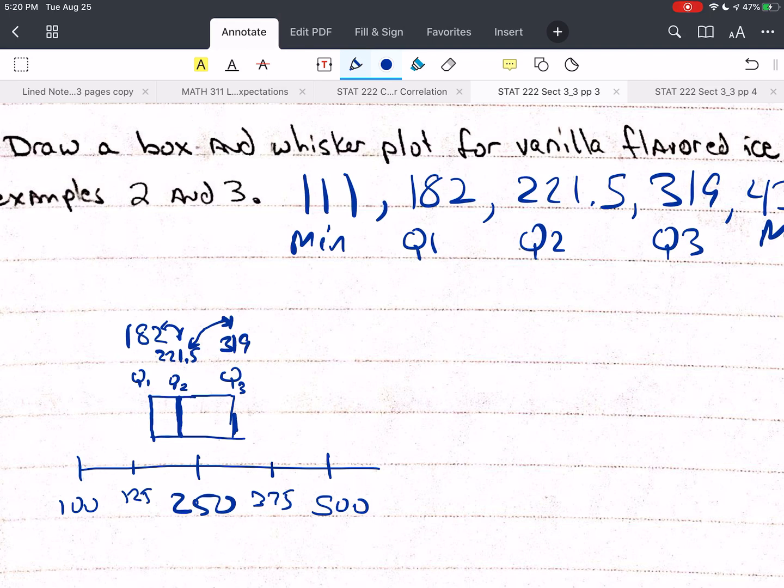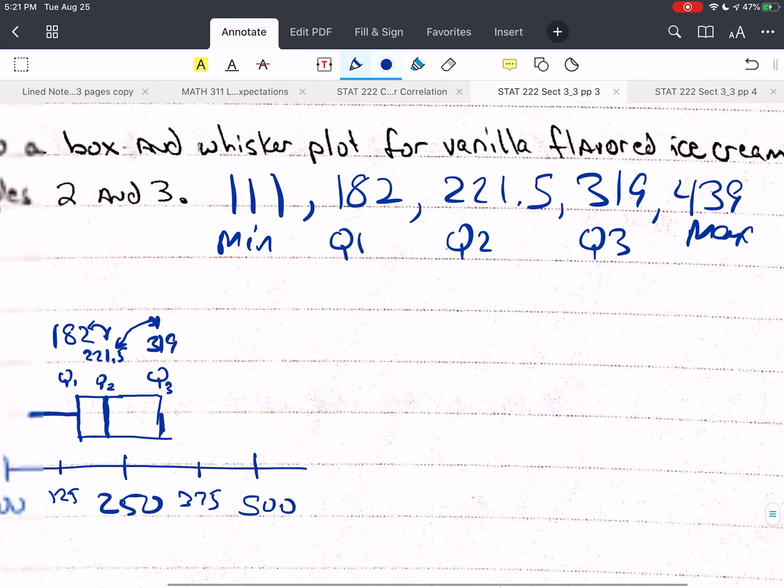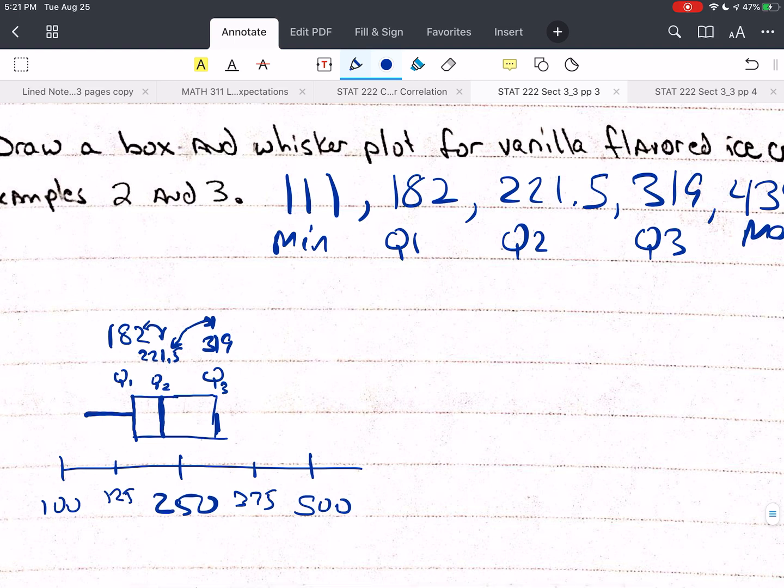So then we need 111. I'm going to say that that is about here. And then we need 439. I'm going to say that that is about here, 439. And we usually put a straight-up line there. And then we'll label this 111. I'm going to clean this up a little bit so that we have our values a little nicer. So, 182, 221.5, 319.